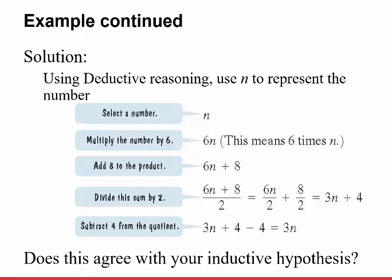Now using deductive reasoning to prove the general case, let n represent the number. Multiply by 6: you get 6n. Add 8: you get 6n plus 8. Divide by 2: breaking the fraction apart gives 3n plus 4. Subtract 4: 3n plus 4 minus 4 equals 3n — which is just 3 times the number you selected. This deductive proof agrees with our inductive hypothesis.